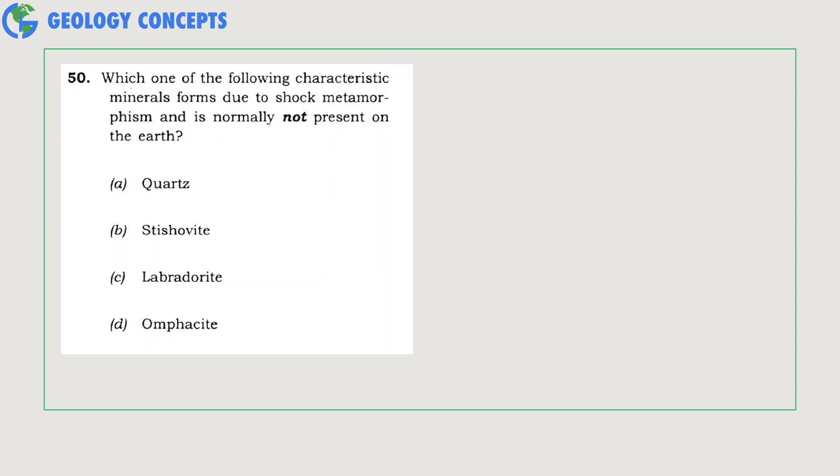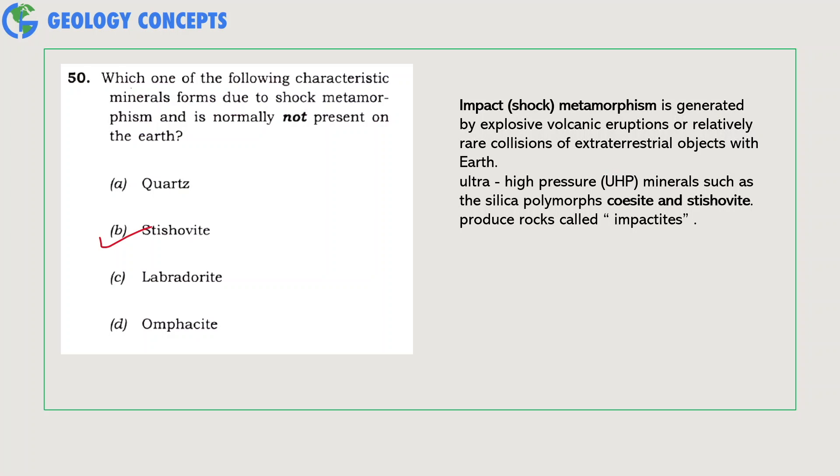Which one of the following characteristic minerals forms due to shock metamorphism and is normally not present on Earth? Impact or shock metamorphism is generated by explosive volcanic eruptions or relatively rare collision of extraterrestrial objects with Earth. Ultra-high pressure minerals such as the silica polymorphs coesite and stishovite produce these rocks called impactites. So option B will be the right answer.